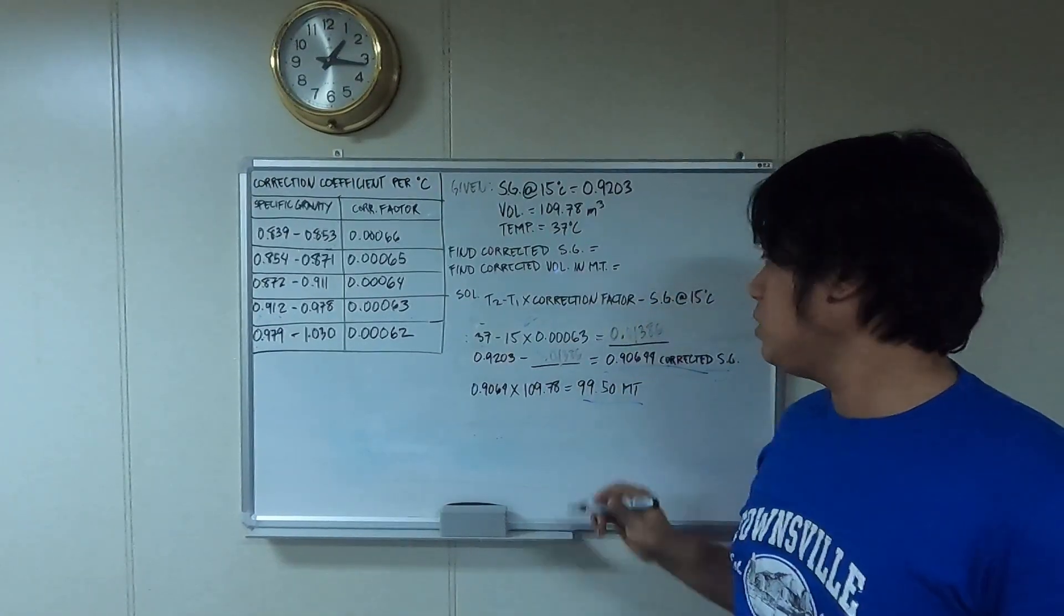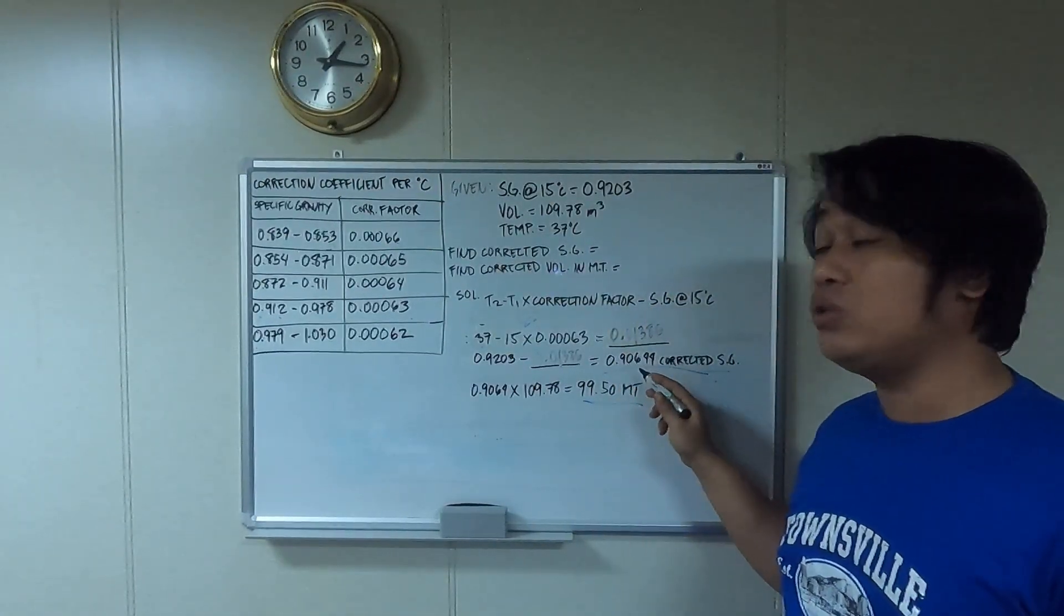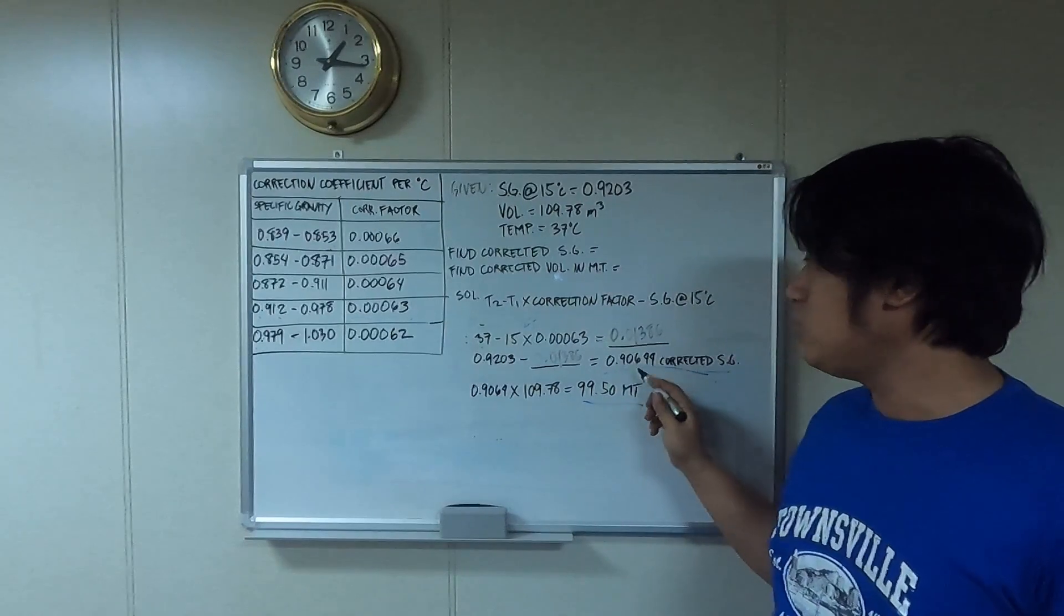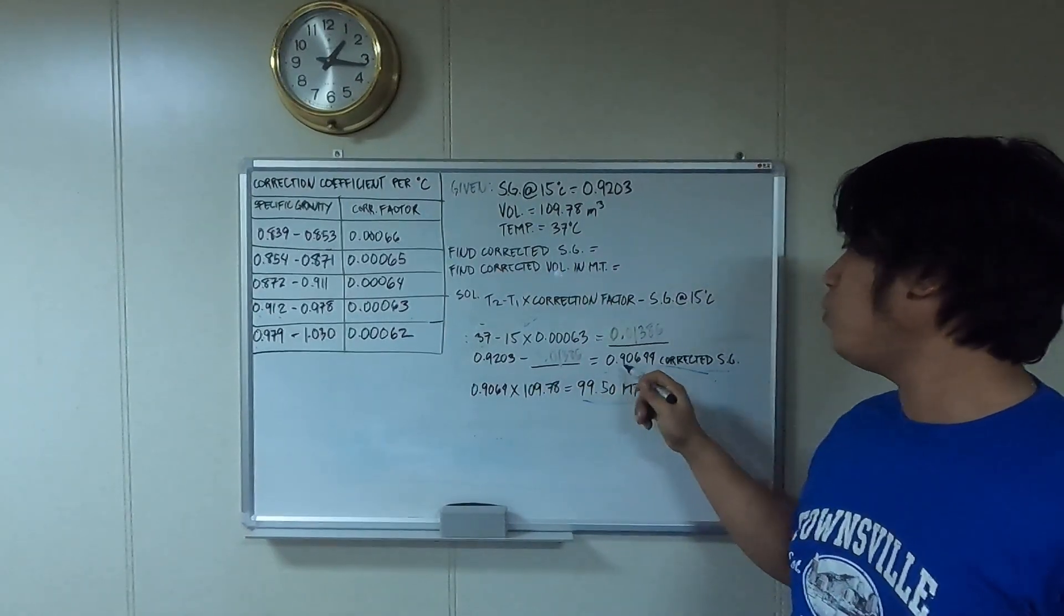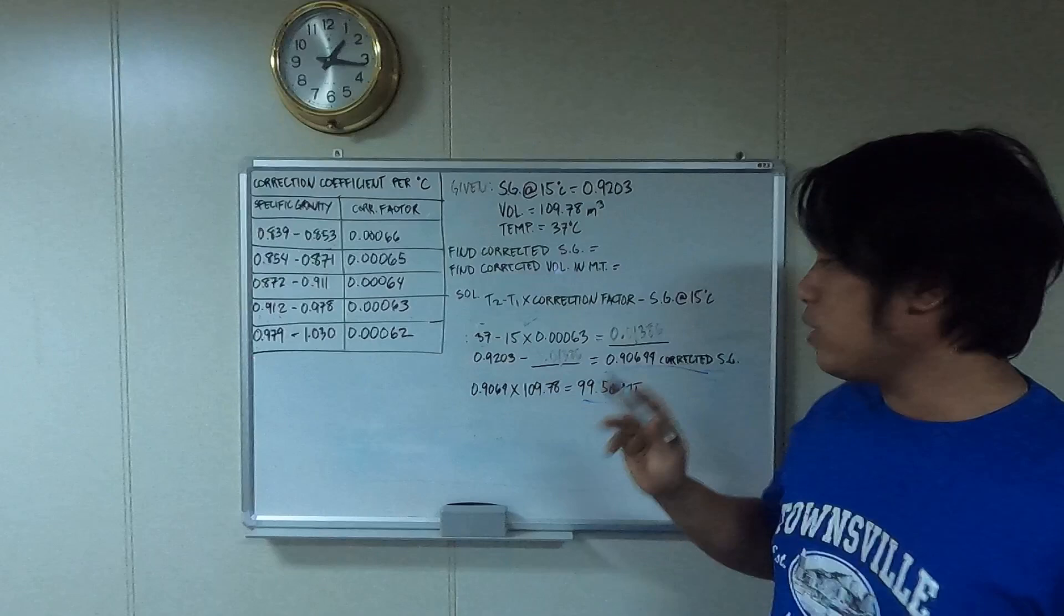This equals a corrected SG of 0.90644. So that's why in the table I showed you earlier, it's 0.9064. This is the reason why it's 0.90644.